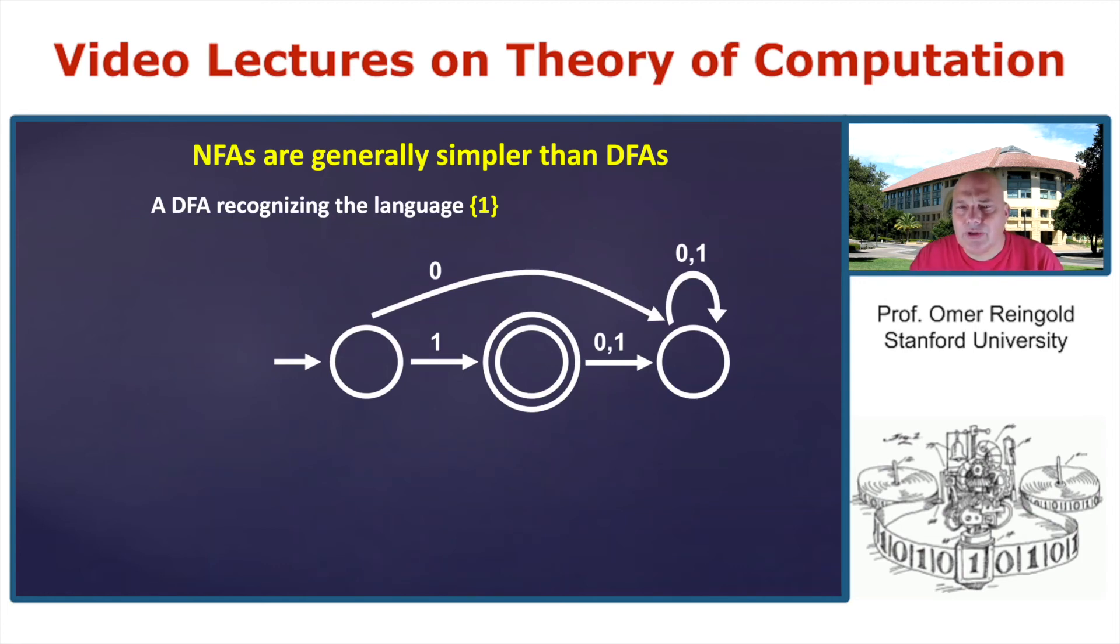NFAs are generally simpler than DFAs. So for example, this is a DFA that accepts the language, which is only one. So essentially, this is the start state. With one, you get an accept state, but now anything else that you'll do, you'll reach a reject state that is a sink. You cannot move out of it. And with a zero at the beginning, you'll go to this reject state and stay there too. So this is what you need to do with the DFA, but how can you do a simpler NFA?